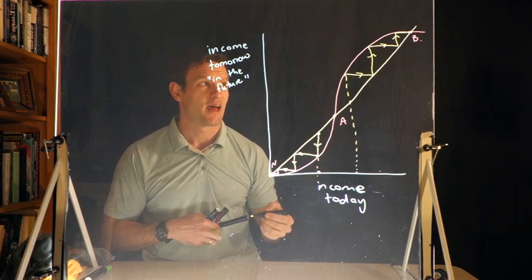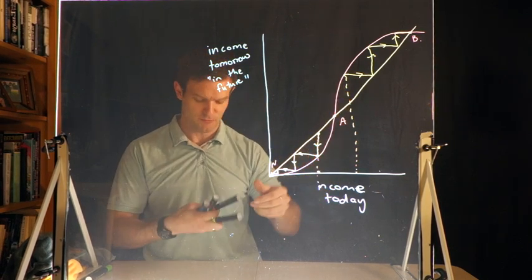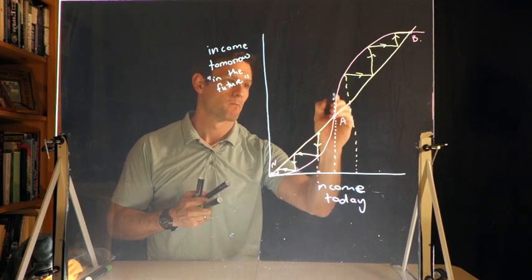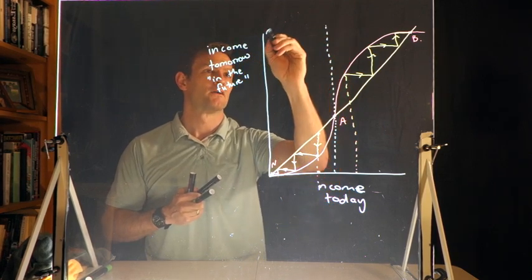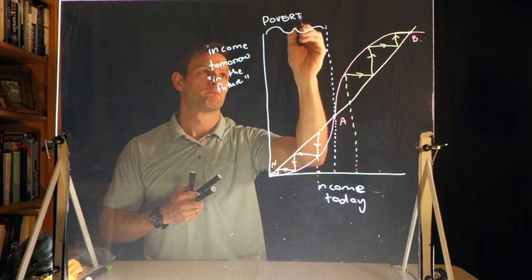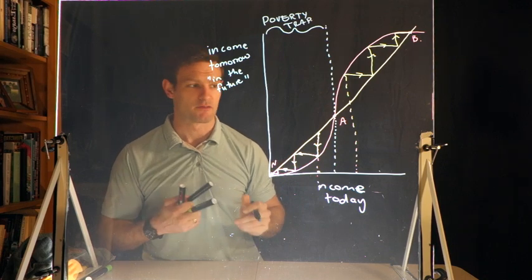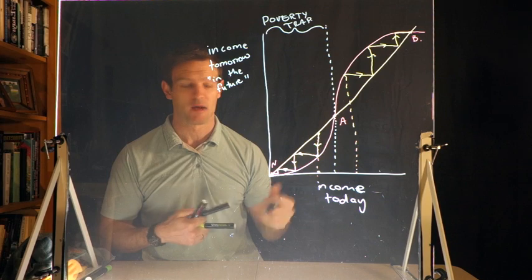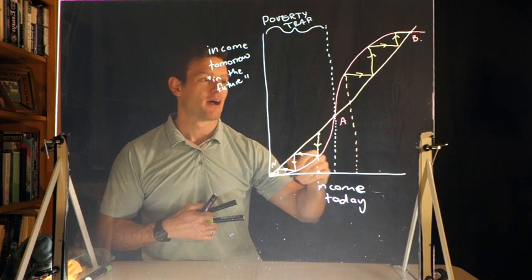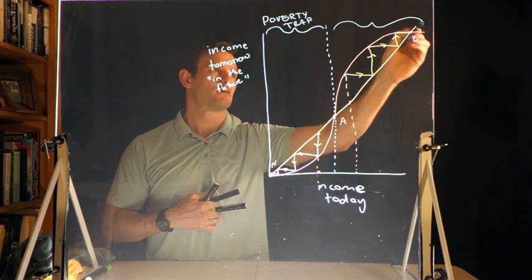The point here is that depending on the income you start off with, if you're on either side of point A, on this side of the figure we're in a poverty trap. As I'm consuming more, as I'm using up my income, I end up at a lower point. It's really hard to get out of the poverty trap. On the other hand, if I'm starting off on the other side of point A, this is sustainable growth.